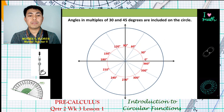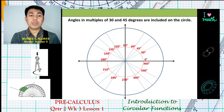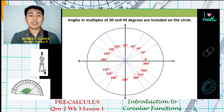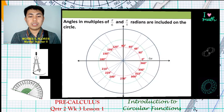The multiples of 45 degrees are: 45 degrees, 135 degrees, 225 degrees, and 315 degrees.